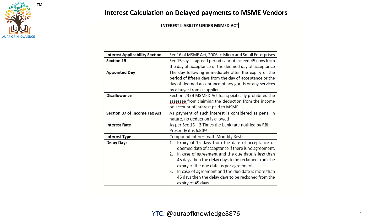Section 15 says that the maximum due date cannot exceed more than 45 days. If there is an agreement between buyer and seller and the due date exceeds 45 days, you have to restrict the due date to 45 days only as per this Act. Contractually the buyer can pay after the 45th day, but interest under this Act must be paid. If the due date as per the agreement is less than 45 days, then the agreement due date is final, and any payment made after that date must account for delayed days with interest.